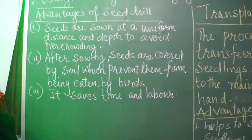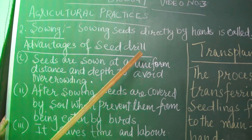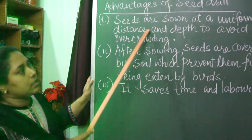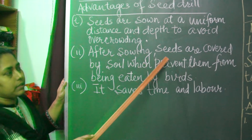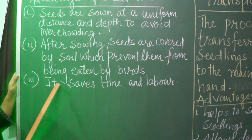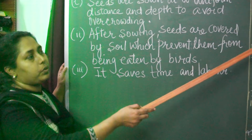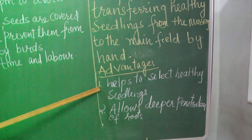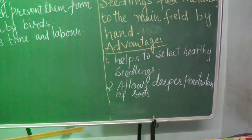The second basic agriculture practice is sowing. Sowing can be done by two methods: either manually or by using a seed drill. The advantages of seed drill are: seeds are sown at a uniform distance and depth to avoid overcrowding; after sowing, the seeds are covered by soil which prevents them from being eaten by birds; and it saves time and labor. Another method is transplantation — the process of transferring healthy seedlings from the nursery to the main field by hand. Its advantages are that it helps to select healthy seedlings and allows deeper penetration of roots.